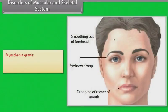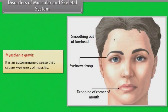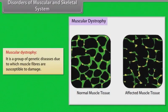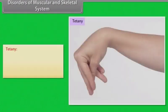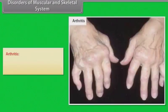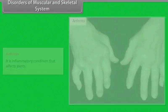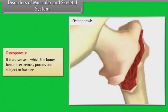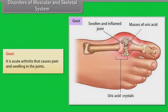Disorders of the muscular and skeletal system. Myasthenia gravis is an autoimmune disease that causes weakness of muscles. Muscular dystrophy is a group of genetic diseases in which muscle fibers are susceptible to damage. Tetany is an abnormal condition characterized by painful muscular spasms due to faulty calcium metabolism. Arthritis is an inflammatory condition that affects joints. Osteoporosis is a disease in which bones become extremely porous and subject to fracture. Gout is acute arthritis that causes pain and swelling in the joints.